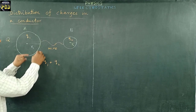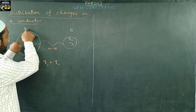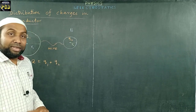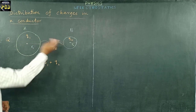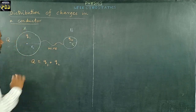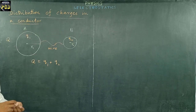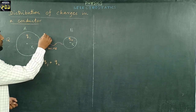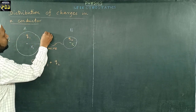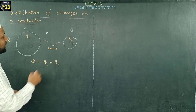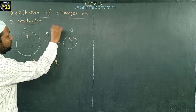The length of the wire used to connect A and B is larger than the radius of A as well as B. And if you compare the radius of A and B, you will find that R1 is greater than R2.